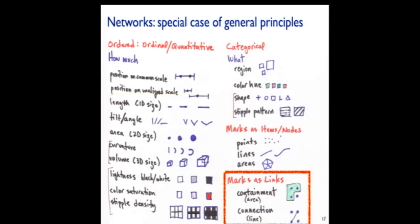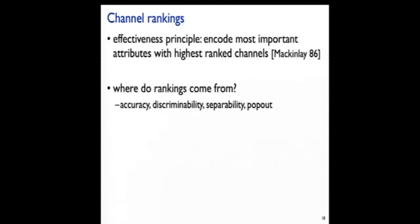It matters a lot to understand and match well the type of data to the visual channel you're going to use. A lot of the interesting issues about the display of networks comes down to how you're actually showing links with visual marks. Some of the very earliest work in visualization from John McKinlay was this idea that we should be careful to match the things that are most important in your data with the most perceptually appropriate channels. When I asserted there was a vertical ordering — that stuff near the top was more effective — how did I come up with that?